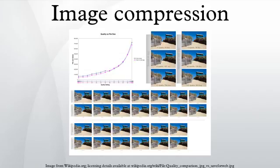Metadata information: compressed data may contain information about the image which may be used to categorize, search, or browse images. Such information may include color and texture statistics, small preview images, and author or copyright information.